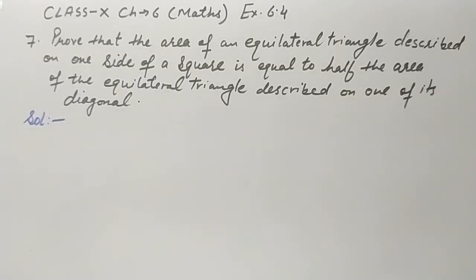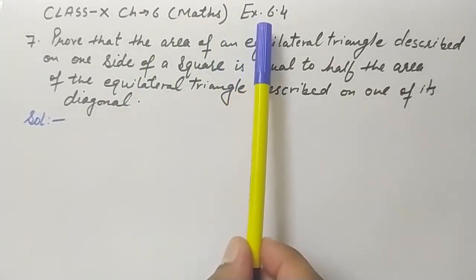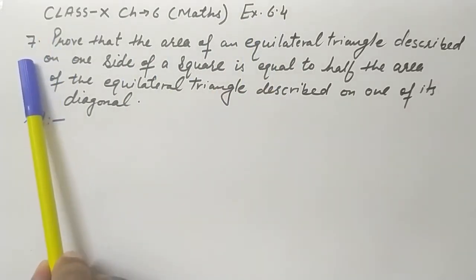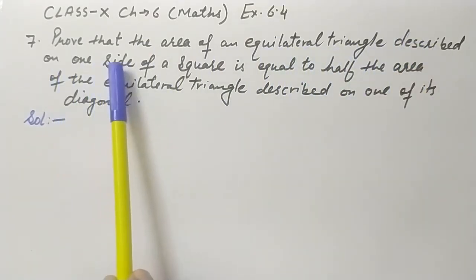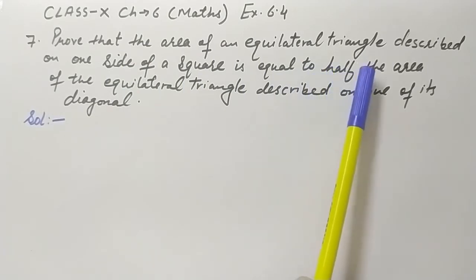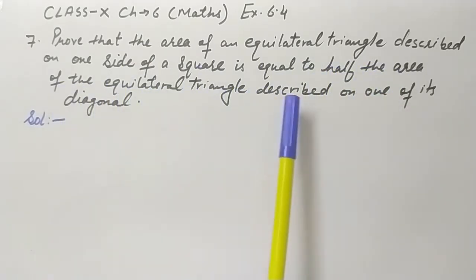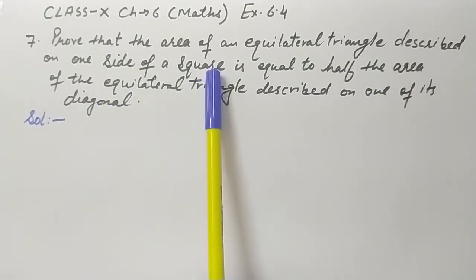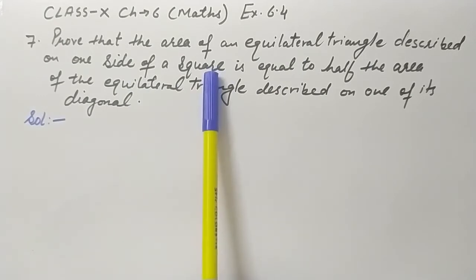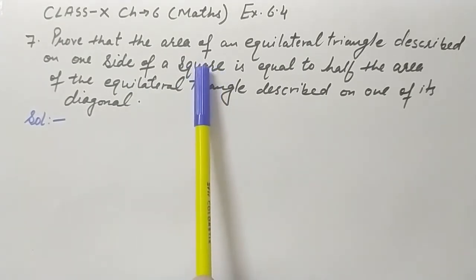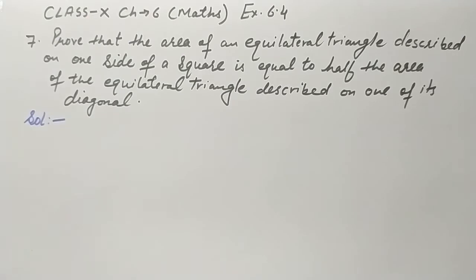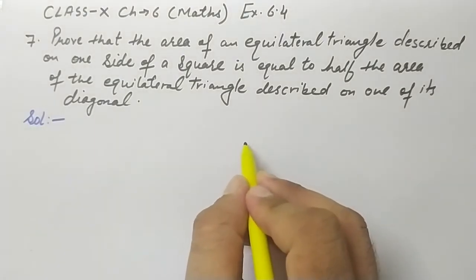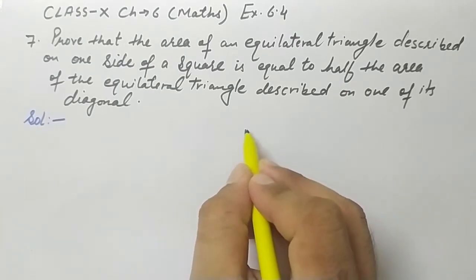We'll do this question taken from Class 10, Chapter 6, Exercise 6.4, Question 7: prove that the area of an equilateral triangle described on one side of a square is equal to half the area of the equilateral triangle described on one of its diagonals. In this question, a square is given with two triangles — one on one of its sides and one on one of its diagonals. Let's draw the figure to understand the question.